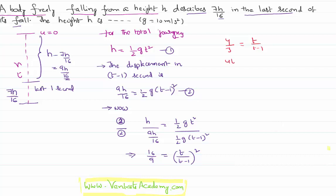That implies 4(t-1) = 3t, so 4t - 4 = 3t, which means 4t - 3t = 4. That implies the total time of the journey is t = 4 seconds. If I know the total time of the journey, I want to calculate the height from which the body is dropped.